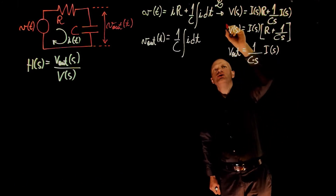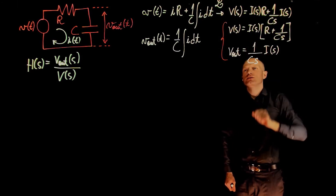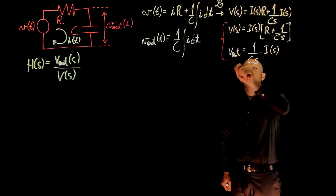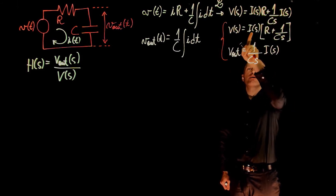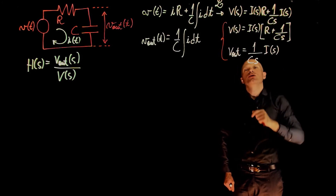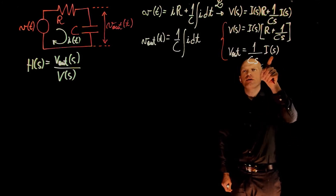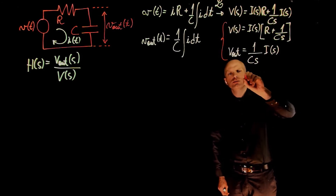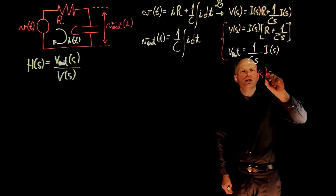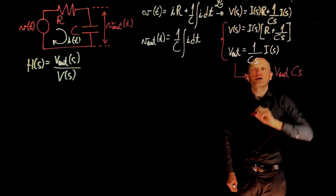Now that we have both expressions, we see that they are linked through I of s. Since we are interested in V out and V of s, we can replace I of s in one of these equations using the expression obtained from the other one. For simplicity, we can isolate I of s in the second equation, which gives I of s equals V out times C times s.